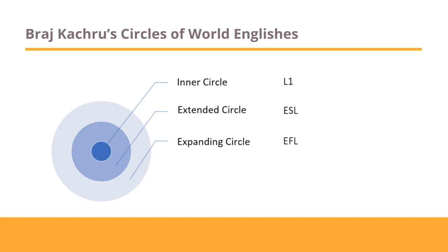Finally, in the expanding or extending circle, English is neither the first nor the second language, rather the language of choice to learn as a foreign language. This includes China, Japan and Greece. It is important to note that currently the number of people speaking English as a first language is outmatched by those speaking it as a second language.